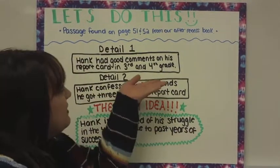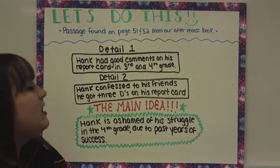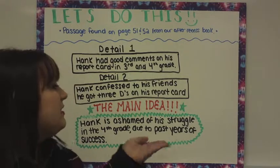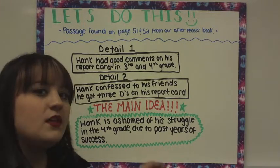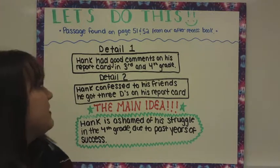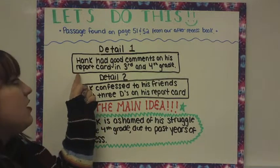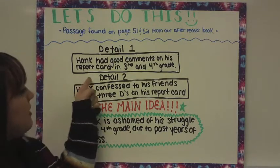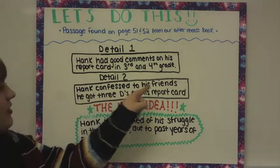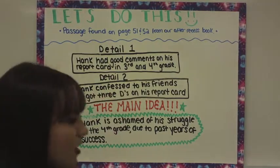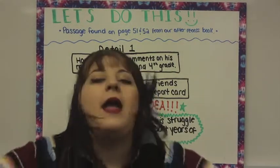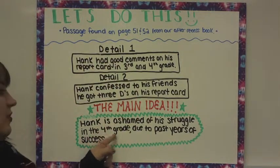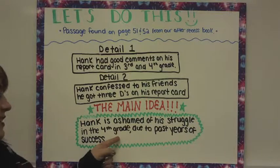In order to make it a little bit easier to find the main idea, I organized a little graph to help sort details one and two and to conclude with the main idea. For detail one, I concluded that Hank had good comments on his report card in first and third grade. For detail two, Hank confessed to his friends that he got three D's on his report card. And for the main idea: Hank is ashamed of his struggle in the fourth grade due to past years of success.